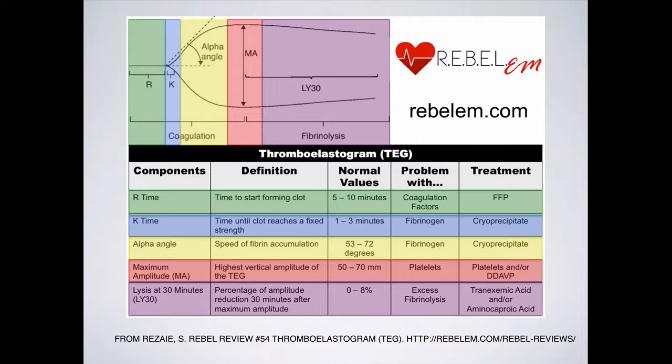In my mind, K and alpha angle fit together and are my trigger to give cryoprecipitate — they're also my trigger to give additional FFPs, because in certain cases some of the gradient of the alpha angle seems to be better reversed with FFPs and more resistant to just giving cryo. It may be the quality of the cryo we have here, but something tells me there's more to it than that.